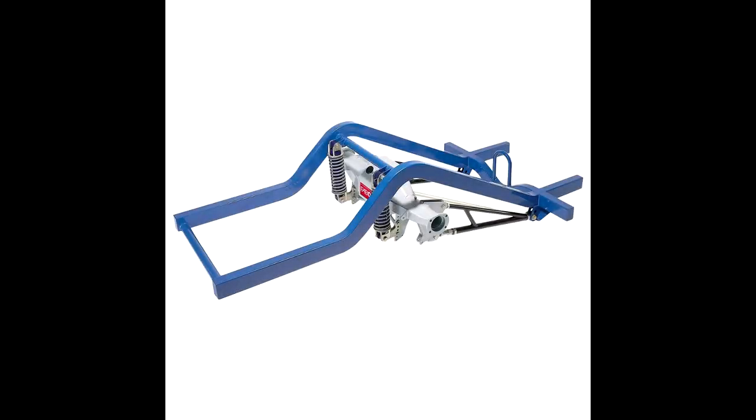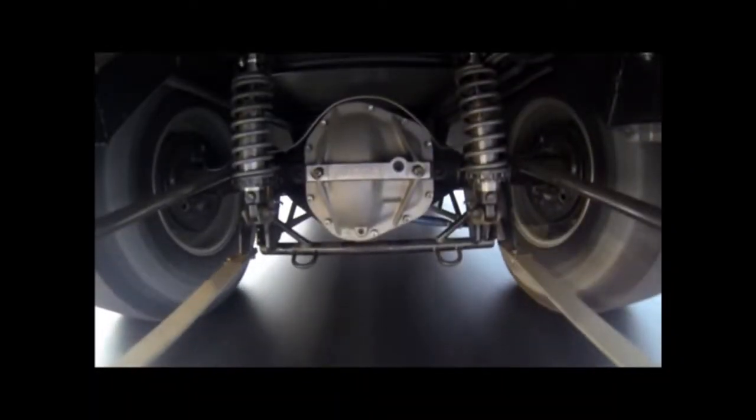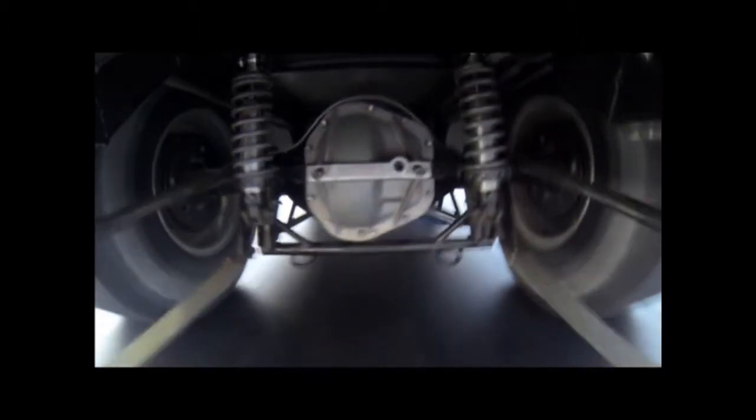Finally we have a ladder bar system which is commonly used in drag racing. There are only two links but they are mounted in a way that prevents any rotation or lateral movement. The suspension can only travel up or down.